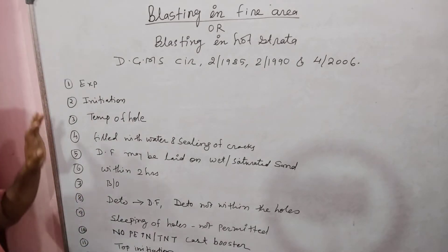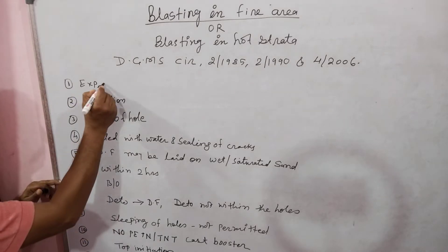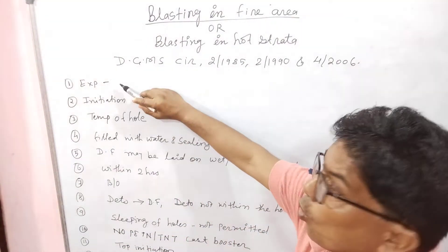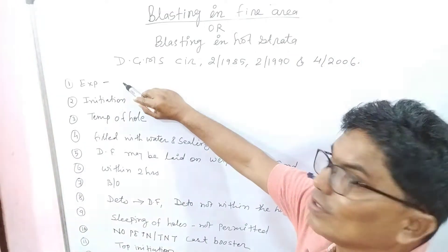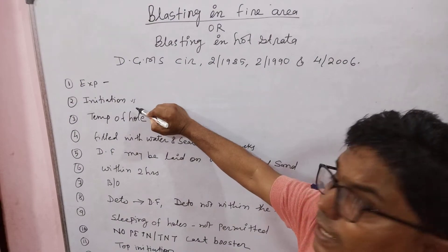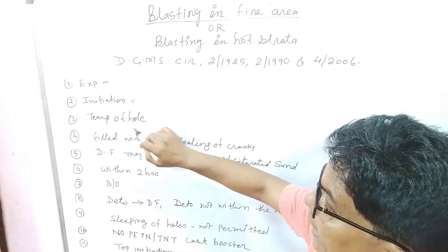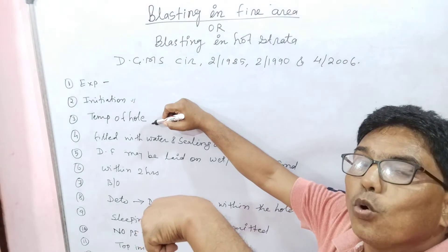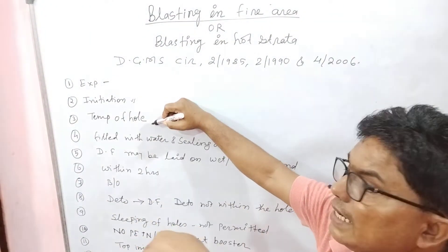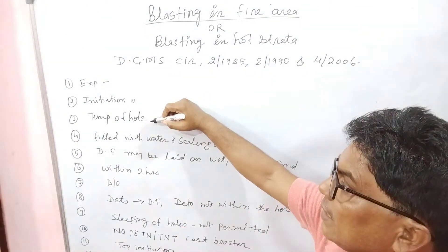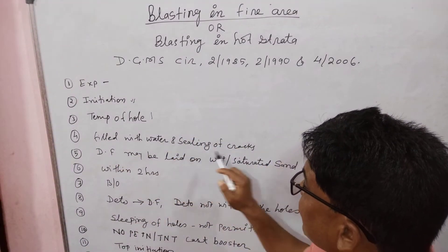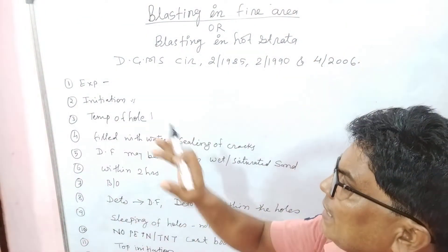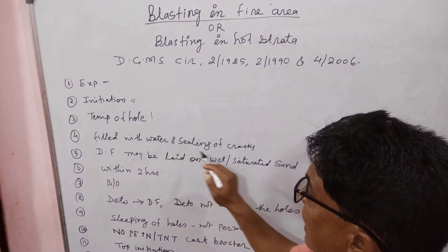We will see the topic of blasting in fire area or blasting in hot strata. Only slurry and emulsion explosives will be used for initiation system. Use only detonating fuse. Temperature of hole measured by blasting officer - if 80 degrees centigrade, the hole will not be charged. Charging with water and sealing of cracks.